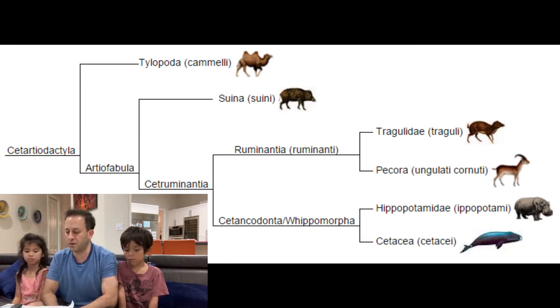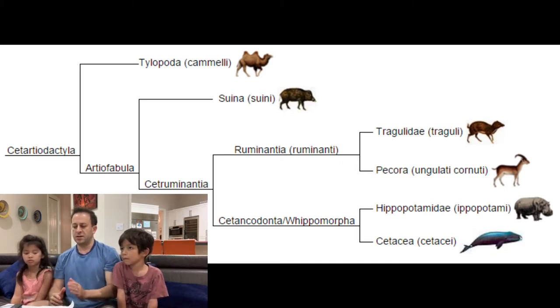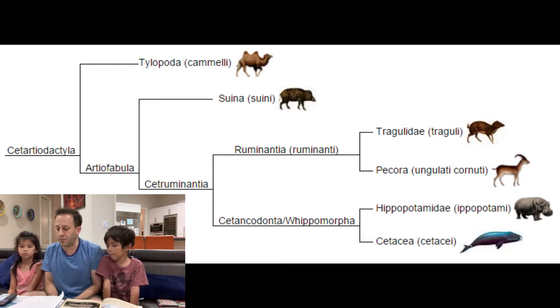Specifically, the even-toed ungulates, which are the artiodactyls — and we remember those from the hippopotamus. But camels are actually pretty distant from the hippopotamus. They're one of the first branches of that artiodactyl group, something called the tylopod group, and then the family is known as the camelids. The camelids only include camels and their distant cousins, the llamas, which we're going to be talking about a little later.